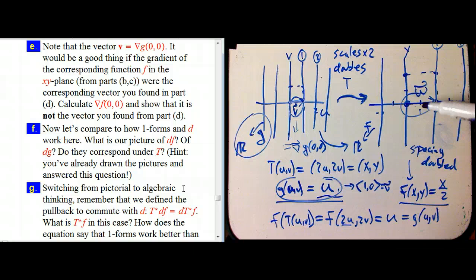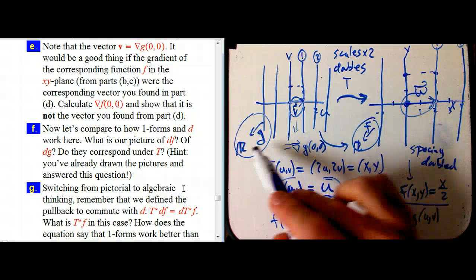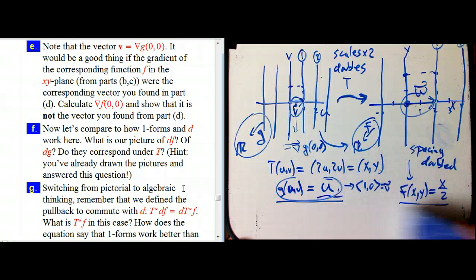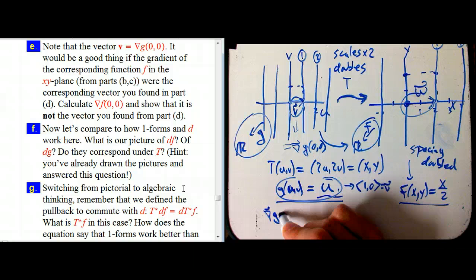But we'd like to also calculate the gradient of f. That's supposed to be essentially the same information as g, just translated. Well, let's see if I can squeeze it in somewhere here. I can put it, I don't need this check anymore.